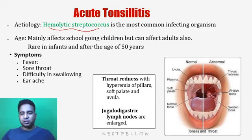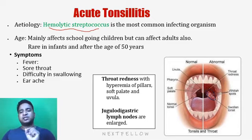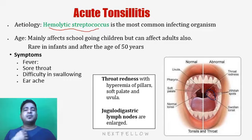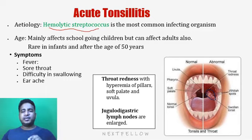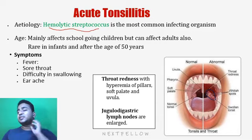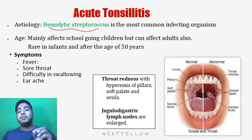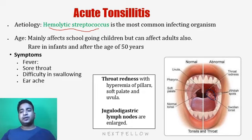Looking at the diagram of tonsillitis, you can see the tonsillar tissue with lots of whitish dots suggesting folliculitis. In tonsillitis, throat redness is present with hyperemia or congestion of the anterior pillar, uvula, and soft palate. The jugular digastric node, which is the main lymphatic drainage of the tonsillar tissue, may be enlarged and can be palpated in affected children.